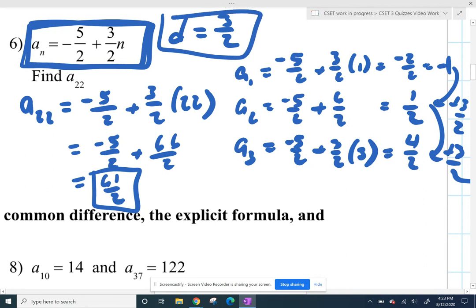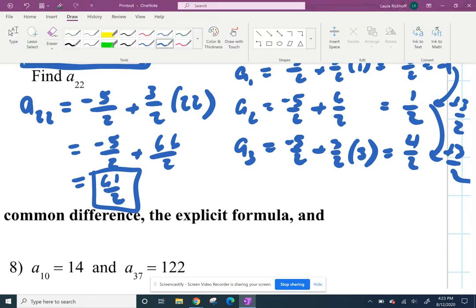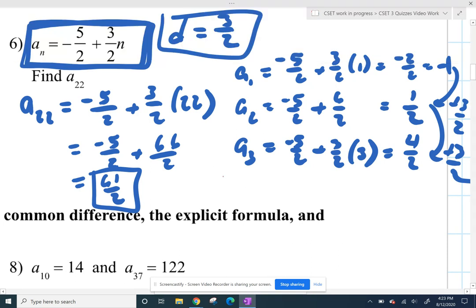That common difference is 3 halves. And so now for our recursive formula. So I went over the recursive formula in the last video. So we'll do it a little bit faster on this one. So recursive, you just say you can get any term you want by taking the previous term, so a sub n minus 1, and adding your common difference. So you just keep adding 3 halves.